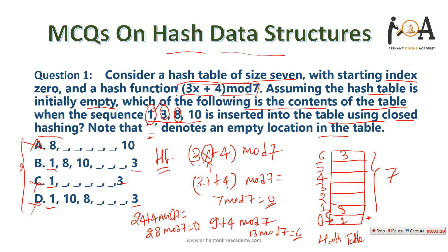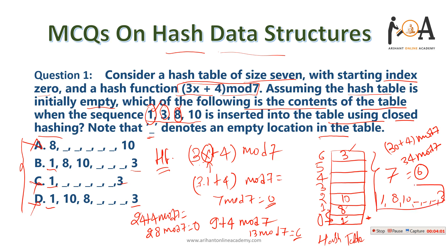For element 10: (3×10 + 4) mod 7 = 34 mod 7 = 6. Index 6 already has 3, and index 0 already has 1, so element 10 is placed at index 2. The final table looks like: 1, 8, 10, then three empty spaces, then 3 — so the correct answer is option B.